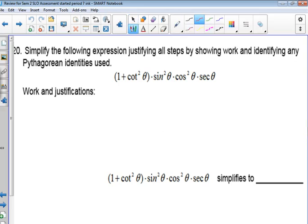All right, I think my last recording actually had number 20 on it, but we'll start here anyway, so they can overlap by one question. So this one says, simplify the following expression, justifying all steps, showing work, and identifying the Pythagorean identity used.